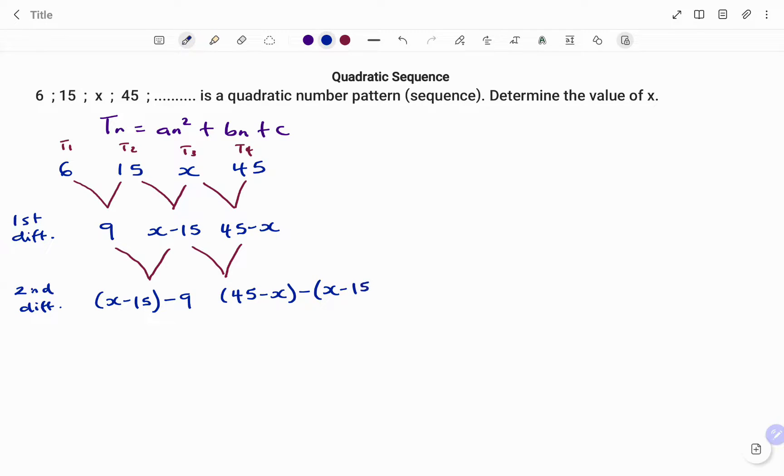If I simplify, what I will have is x minus 15 minus 9, and on my right hand side I have 45 minus x minus x plus 15. What I've done is the minus one, there's an invisible one in front of the bracket that will multiply all the terms within the bracket.